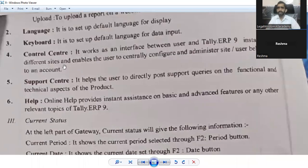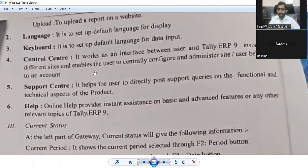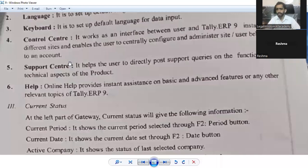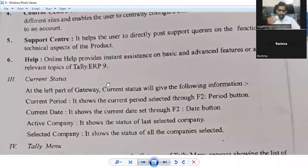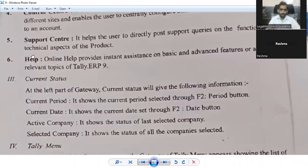Fourth one is control center. Control center is nothing but an interface between the user - if I am using Tally, I am the user - and the Tally ERP 9, that is the software installed at different sites, and enables the user to centrally configure and administer sites belonging to an account. If you are admin and your software is on different computers, you can sit at one place and do all the settings. That is known as the control center or headquarters. Fifth one, support center. Support center helps the user to directly post support queries on the functional and technical aspects of the product.